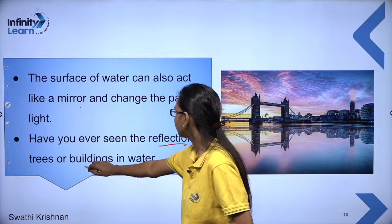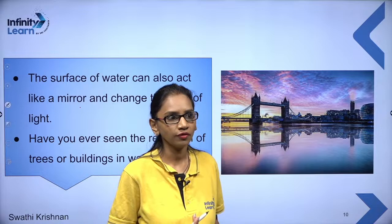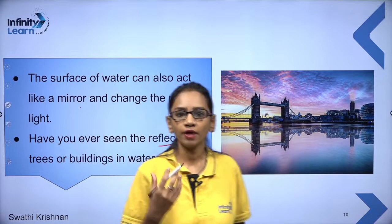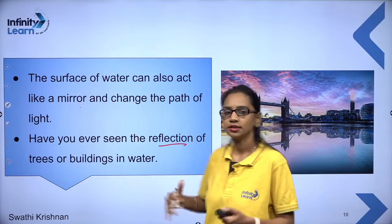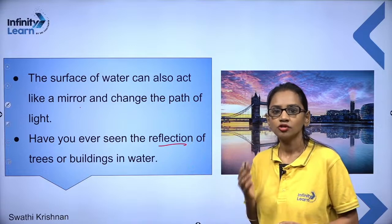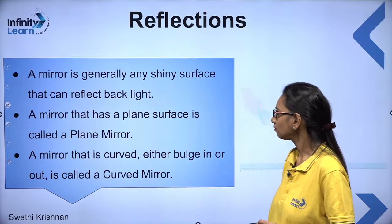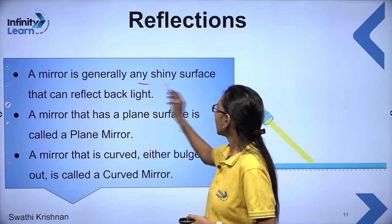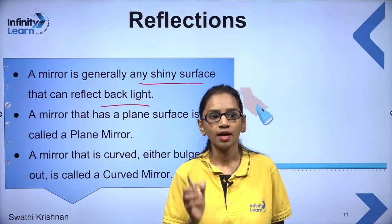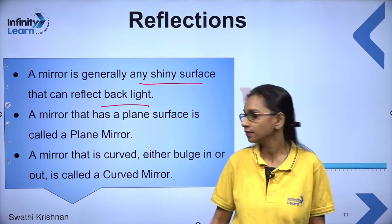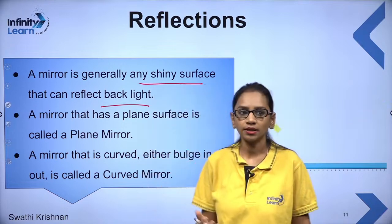Have you ever seen the reflection of trees or buildings in water? It is a very normal phenomenon. A mirror is generally any shiny surface that reflects back the light. The image of an object can be defined as the impression of the object created by light on the mirror. This is being created by the light with the help of the mirror.